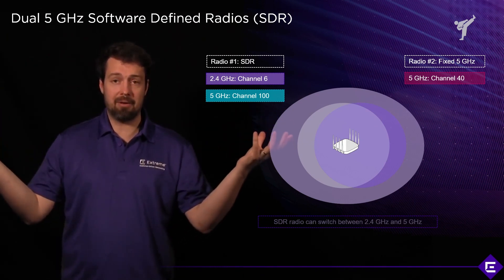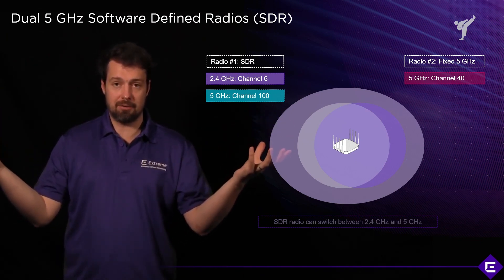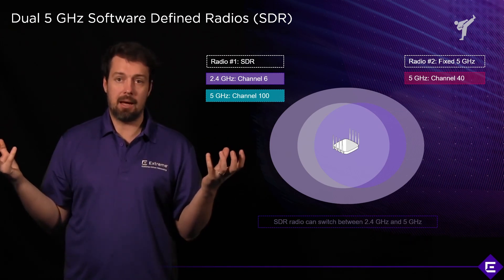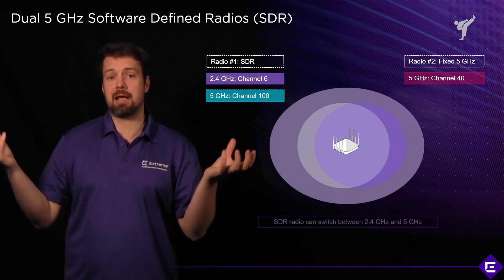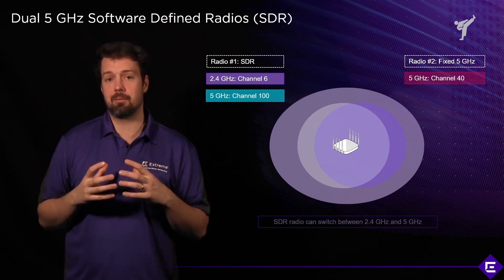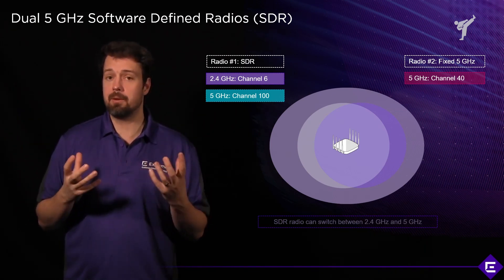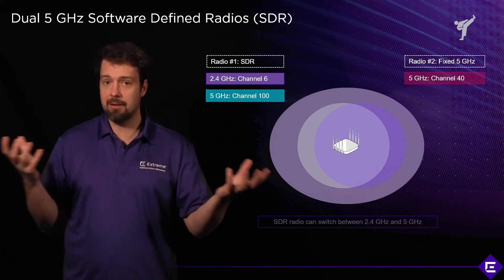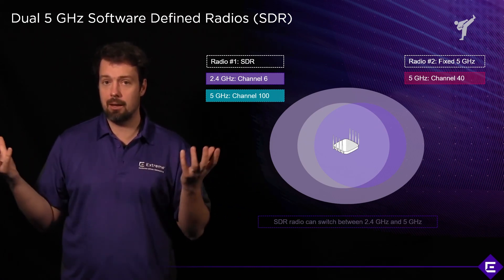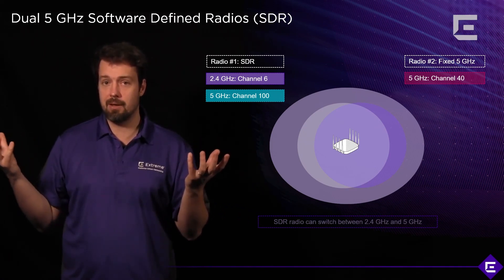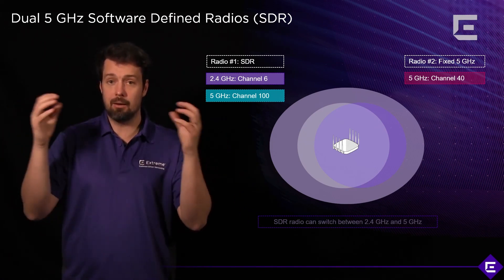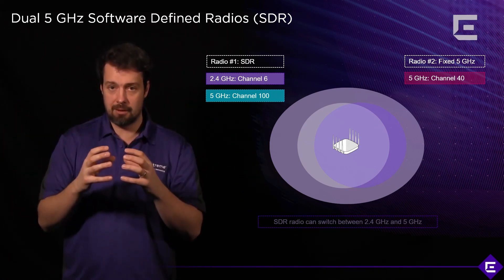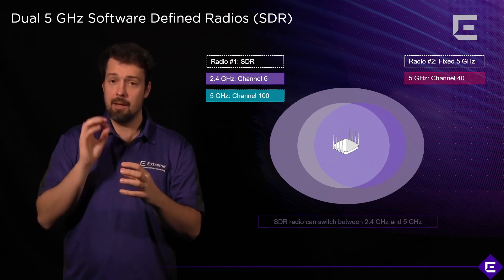This doubles the capacity. And it also protects your investment, because typically you'd have to buy two access points to provide two 5 GHz BSSs. Here, all of this is done in a single AP.